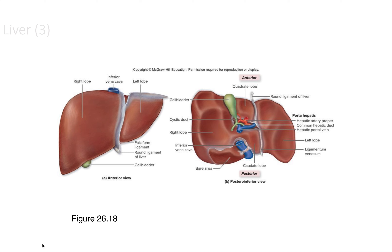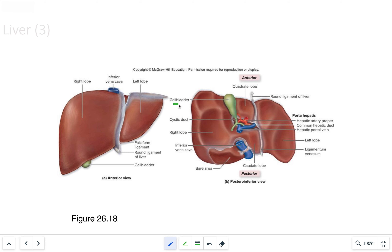The first accessory organ is the liver. Its main function is producing and releasing bile, which is collected in the gallbladder. It also detoxifies the blood from drugs, metabolites, and poisons, storing them in the liver. It also stores excessive nutrients absorbed by the GI tract and can release them when necessary, such as when the body is deficient in certain vitamins.